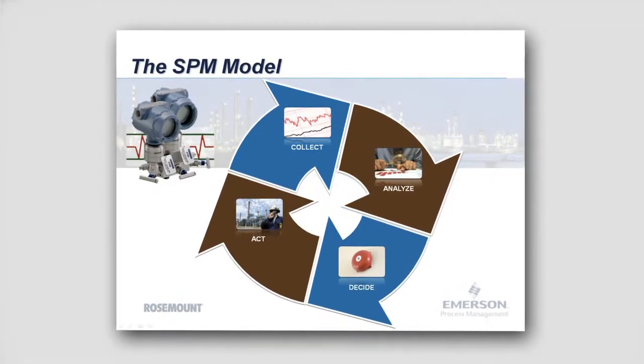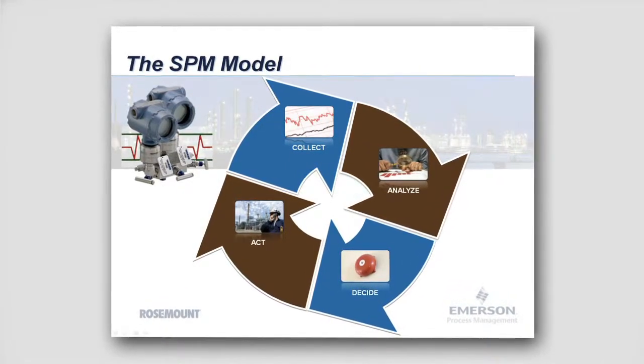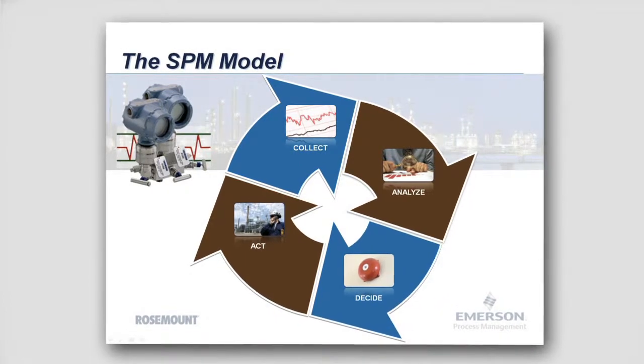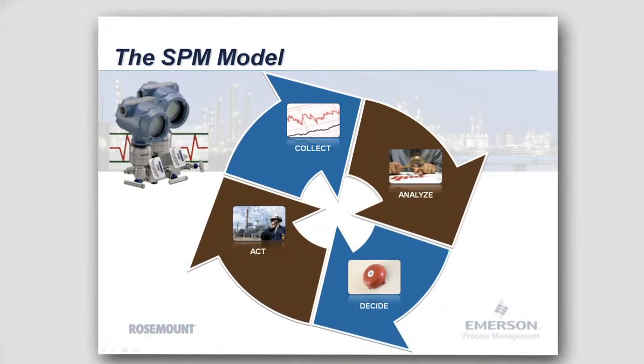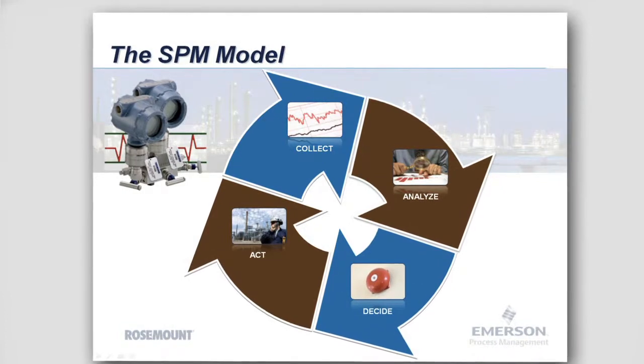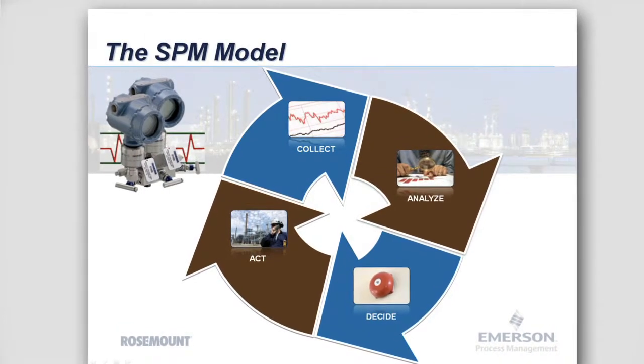However, if we utilize the process variability seen by the 3051S and follow the four simple steps of the SPM model to collect, analyze, decide, and act, we can detect and prevent abnormal situations in the process.